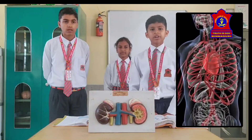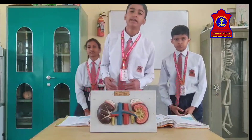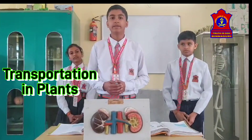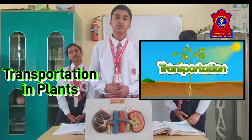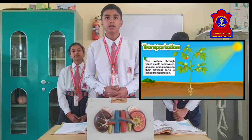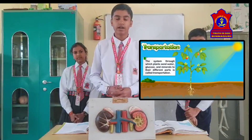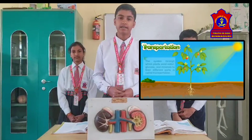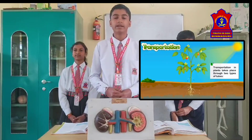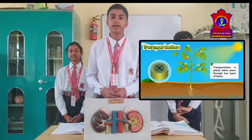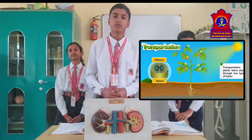Now my friend Karim will tell you about transportation in plants. Hi, my name is Karim. Let me explain transportation in plants. Plants take nutrients and water from the soil through their roots and transport them to different parts of the plant. There are two types of vascular tissues that help in transportation: xylem, which transports water and nutrients, and phloem, which transports food to different parts of the plant.